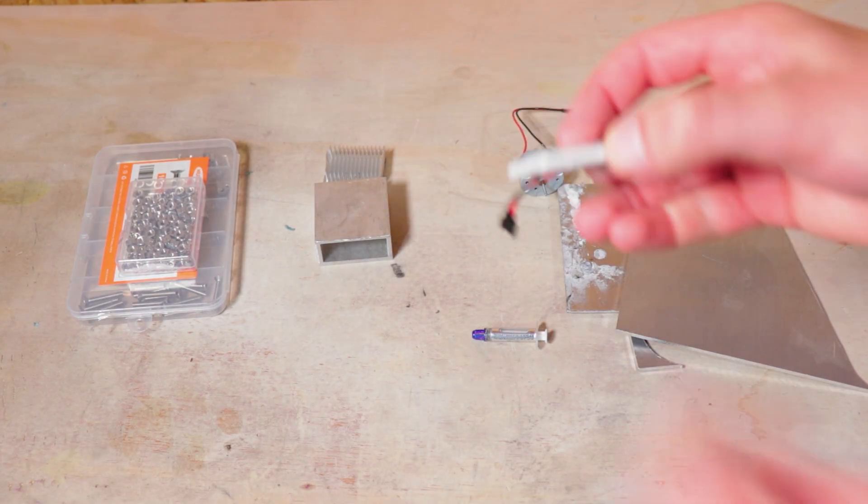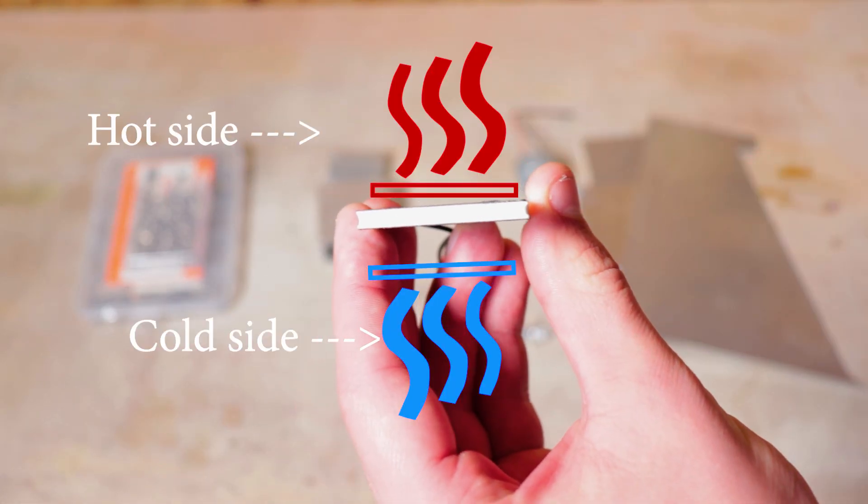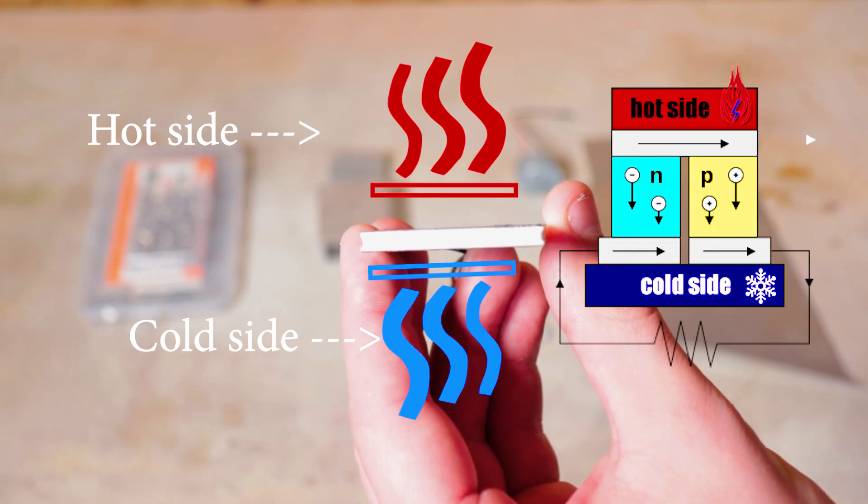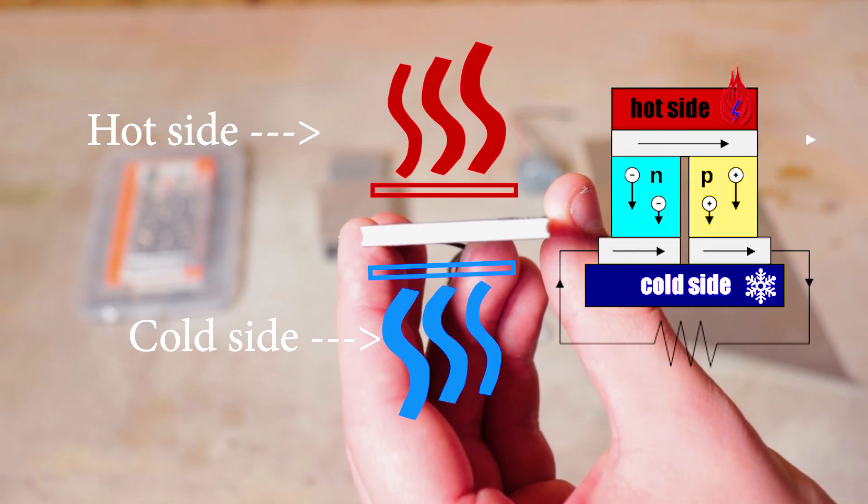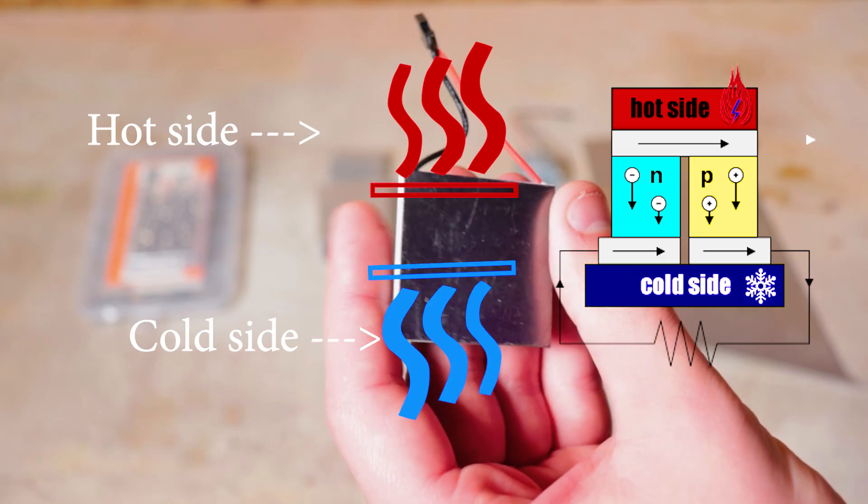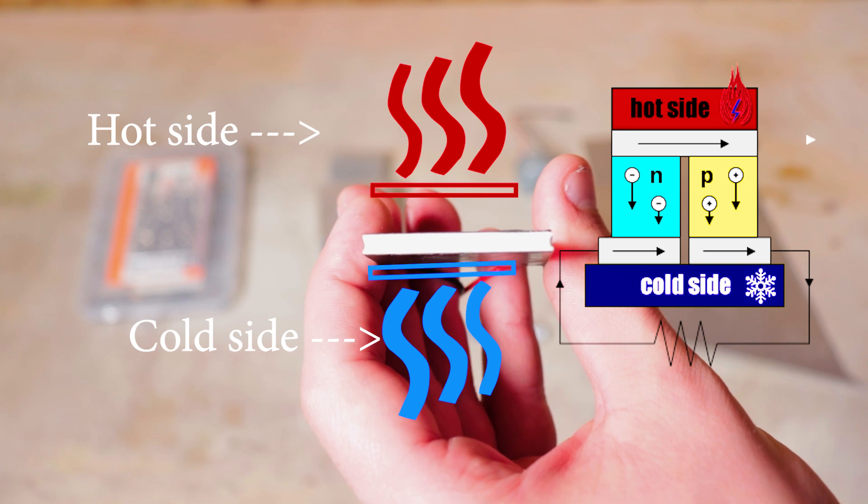At the core of our generator is a thermoelectric module that converts a temperature gradient between its hot and cold sides into a voltage gradient via the Seebeck effect. Electrons in the N-type and holes in the P-type semiconductors move from the hot side to the cold side generating a voltage. When we hook a load up to this voltage potential, current flows converting the heat into usable electricity.